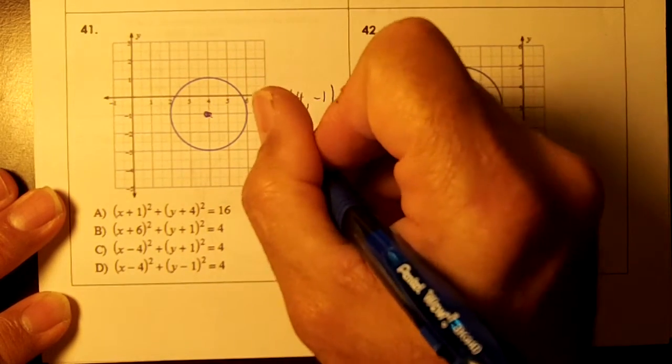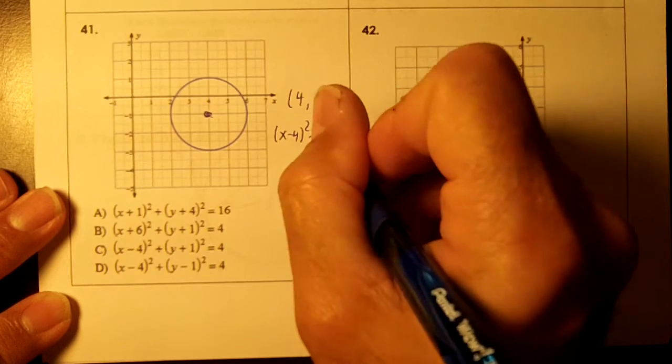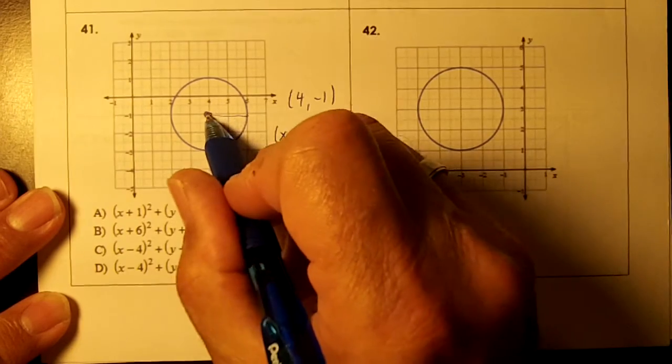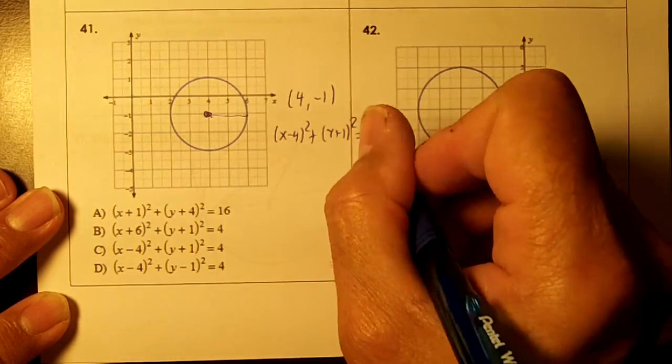So we're going to make our x parentheses as x minus 4 squared, plus our y parentheses as y plus 1 squared, and the radius is from here to here, it's 1, it's 2, so it's going to equal to 4.